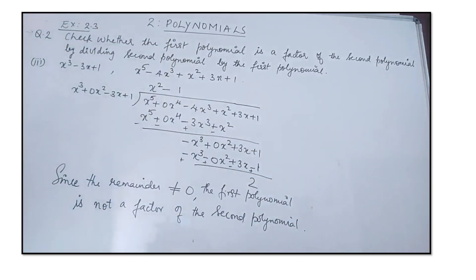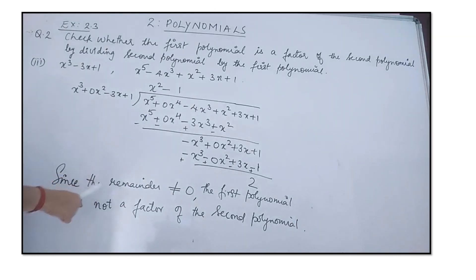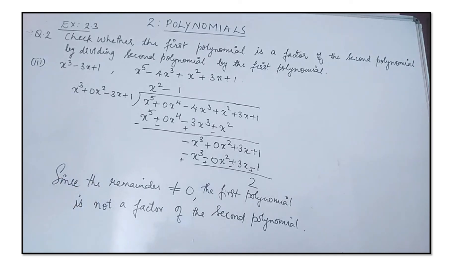This is the way to check whether a given polynomial is a factor of another polynomial. If you get the remainder to be 0, it will be a factor. If the remainder is not equal to 0, then the first polynomial will not be a factor of the second polynomial.